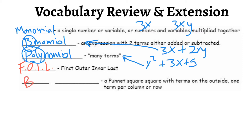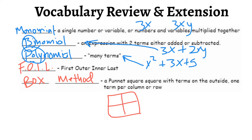And then we have box method. Box method is very similar to what you've done in biology with Punnett squares, where you're trying to figure out recessive traits and dominant traits. You probably remember seeing something like a box with capital T, lowercase t — recessive traits and dominant traits. As you start multiplying and filling in the box, you can figure out what kind of genes you're going to have, dominant and recessive. I'll show you how to use this box as a Punnett square to multiply these different expressions.